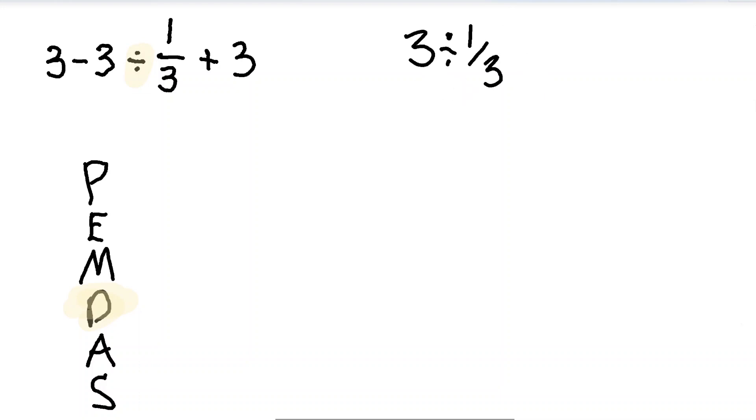3 divided by 1/3 is equal to 3 times 3 over 1, and 3 over 1 is the same as 3, so it's 3 times 3, so it's 9. So we have 9 for this, so let's now rewrite it: 3 minus 9, which is this whole thing, plus 3.